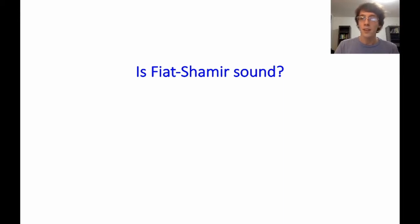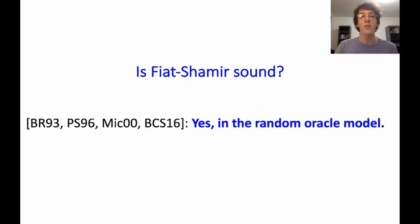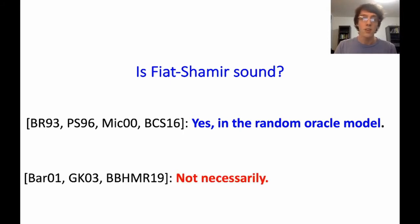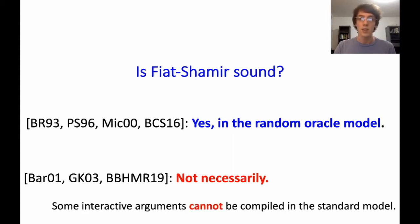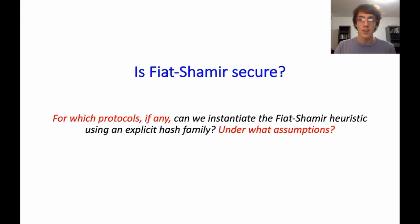Syntactically this makes sense, but it's unclear whether the soundness of the protocol is preserved. The question is whether it's still difficult for a cheating prover to produce a proof of a false statement. Despite this transformation being ubiquitous in cryptography for decades, relatively little is known on the theory side. We know that if you model the hash function as a random oracle, the transformation is provably sound in fairly high generality.